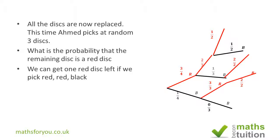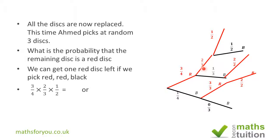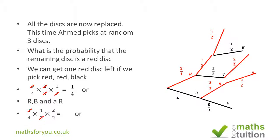So the routes we have are: red, red, black — picking two reds and a black — which gives three over four times two thirds times one half. Cancelling out, that gives us one over four. Or we can go red, black, red, which gives three over four times one over three times two over two. Cancelling out, that also gives us one over four.